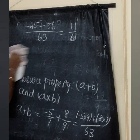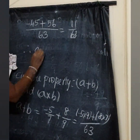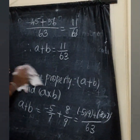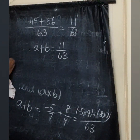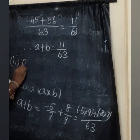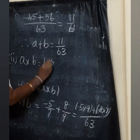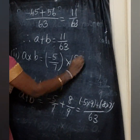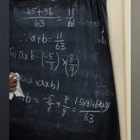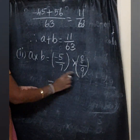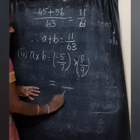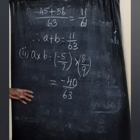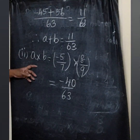Therefore, A plus B equals 11 by 63. Next, A into B: minus 5 by 7 into 8 by 9. The denominator is 7 into 9 equals 63, and minus 5 into 8 is minus 40. So A into B equals minus 40 by 63.